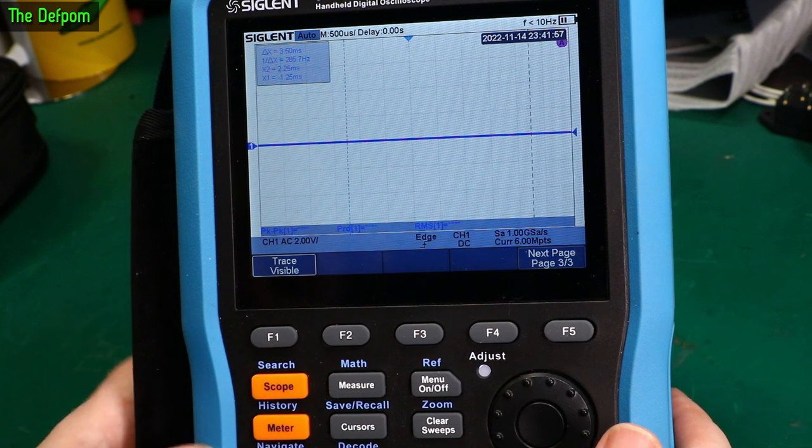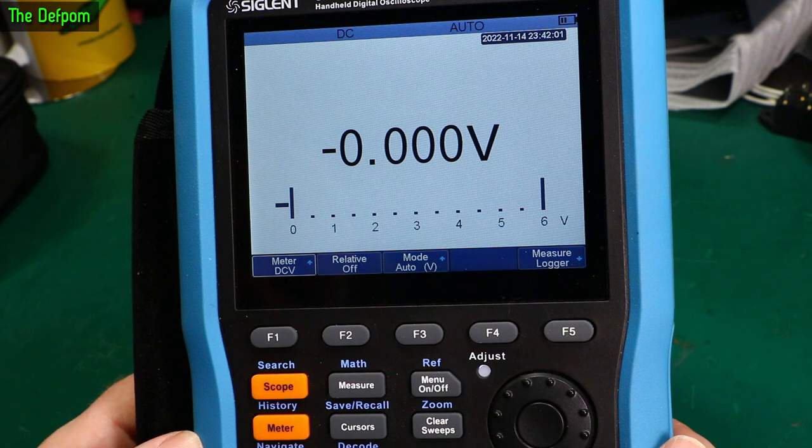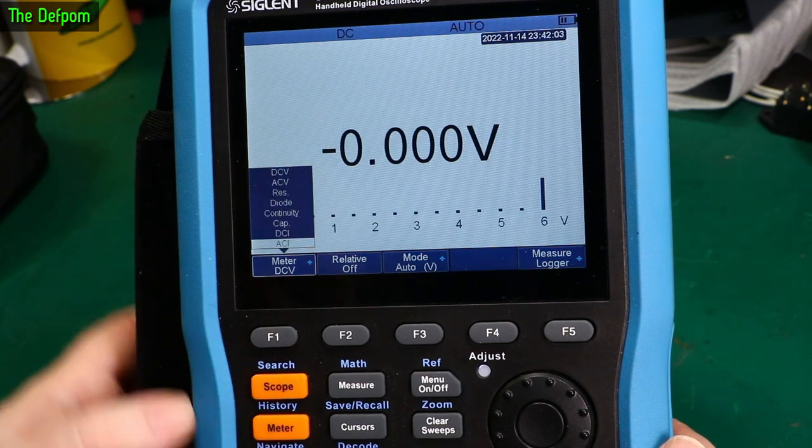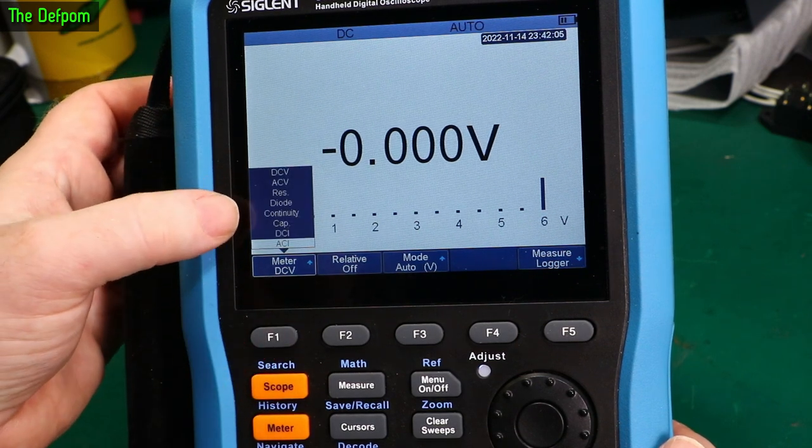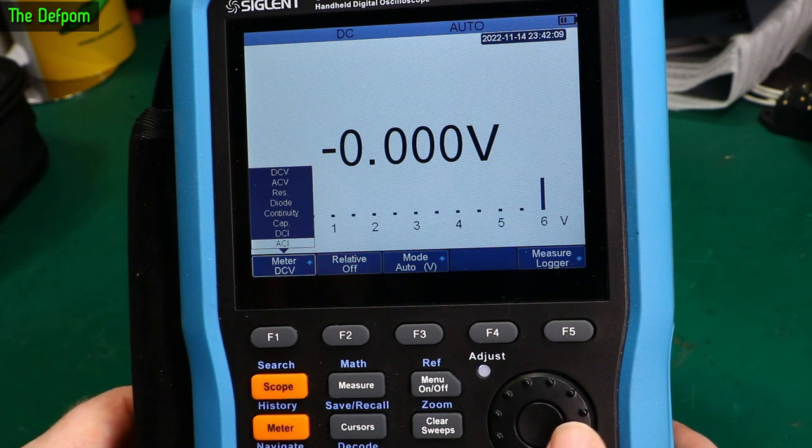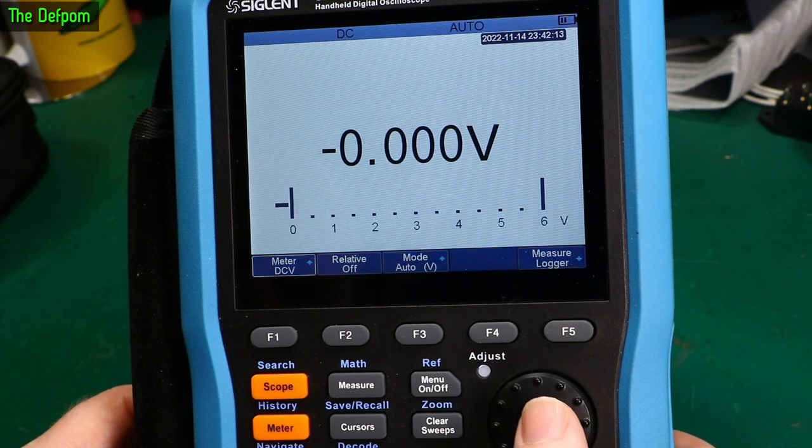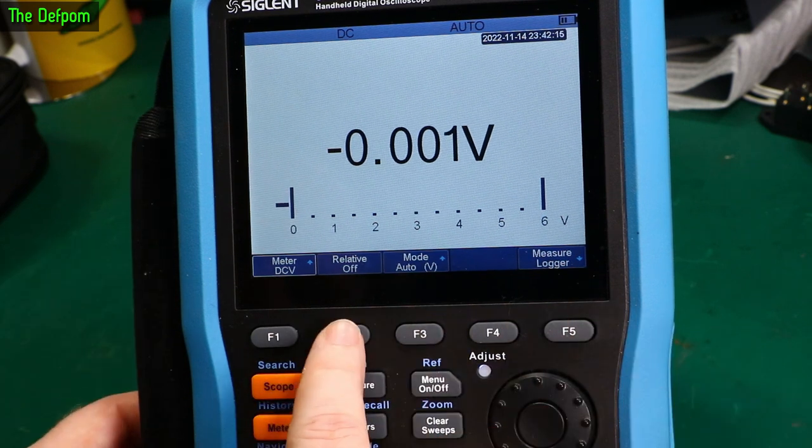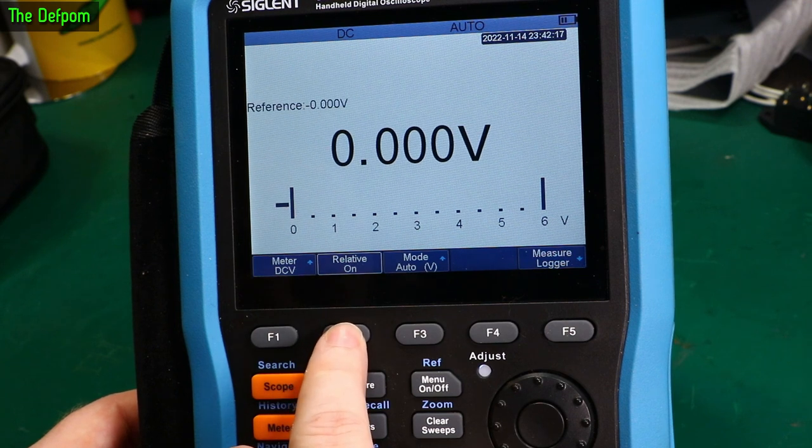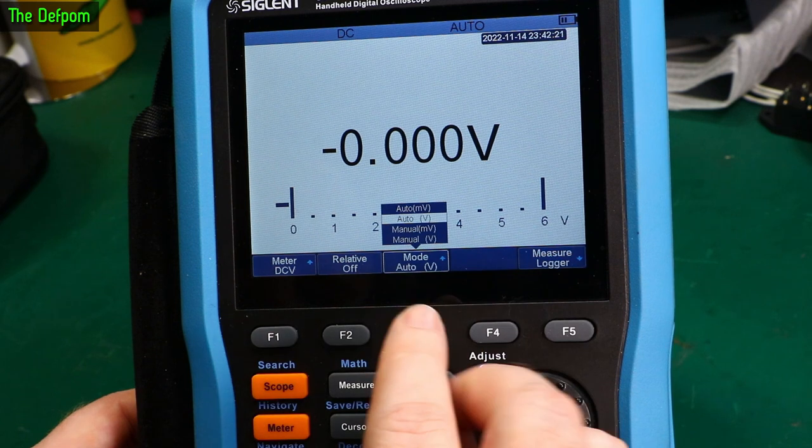So obviously that's on the scope function. Let's push the meter button. There's the multimeter function. So what we've got in here. So DC, AC volts, resistance, diode, continuity, capacitance and DC current. Oh and AC current. That's there as well. Okay. We'll measure on DC volts.